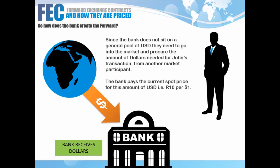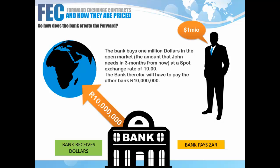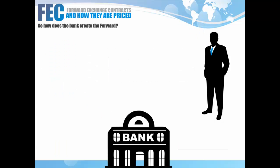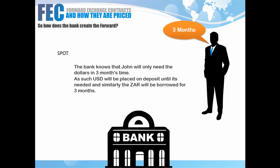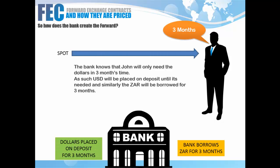Let's say this is a South African bank buying dollars from a US bank. The US bank doesn't know or care about John's trade — it wants its rands now. So the bank has to physically settle 10 million rand for the dollars it just bought in spot. The bank also doesn't have 10 million rand sitting aside, so the trader has to go internally to the money market desk and borrow the 10 million rand for three months. They know that in three months John will come and settle in rand, so at that point they'll receive enough rand to repay this loan obligation.